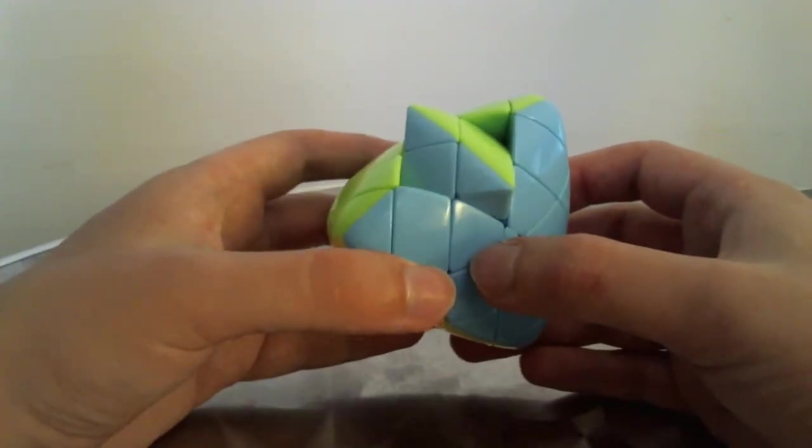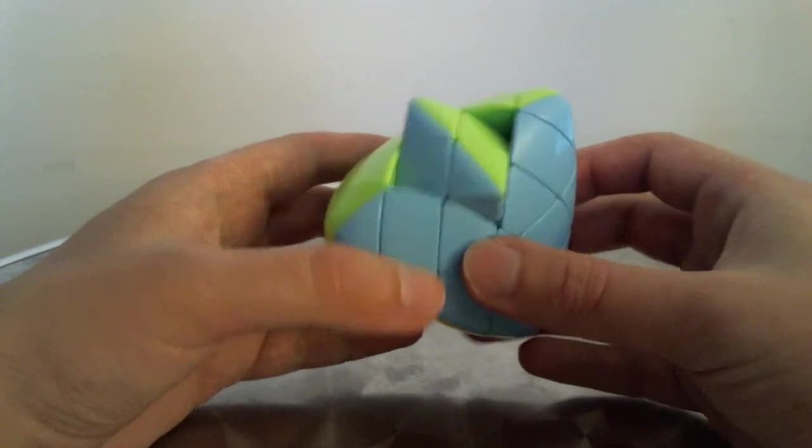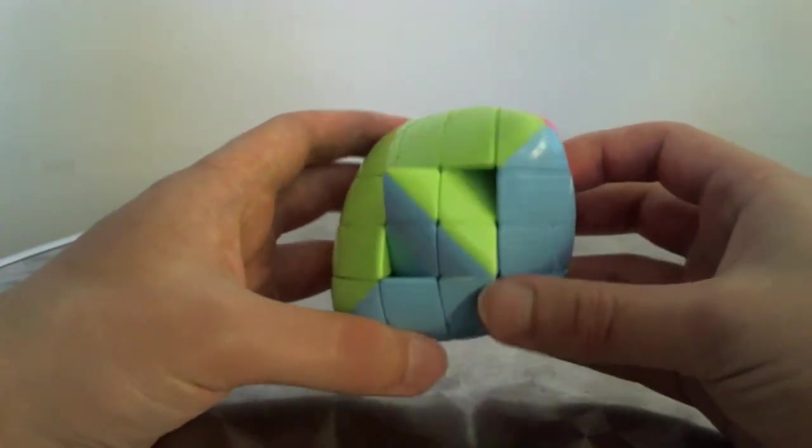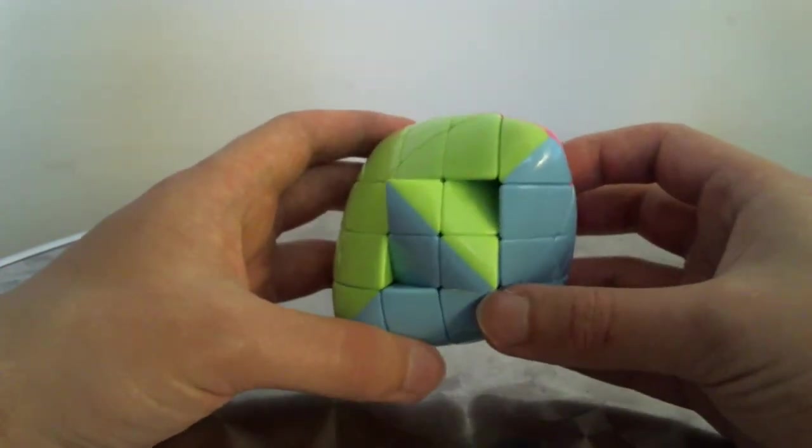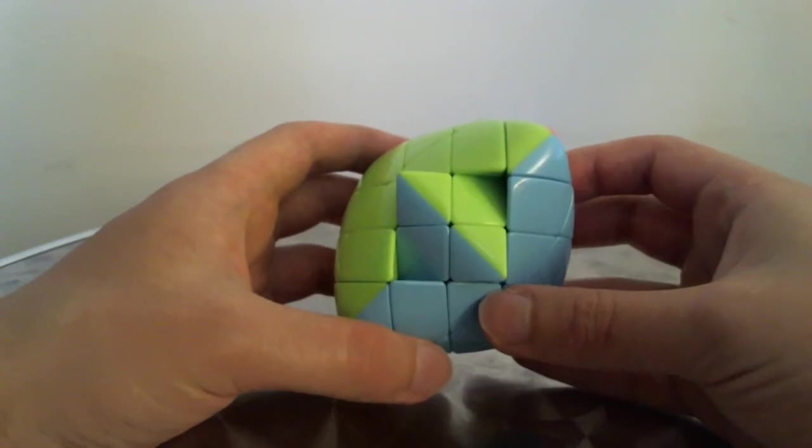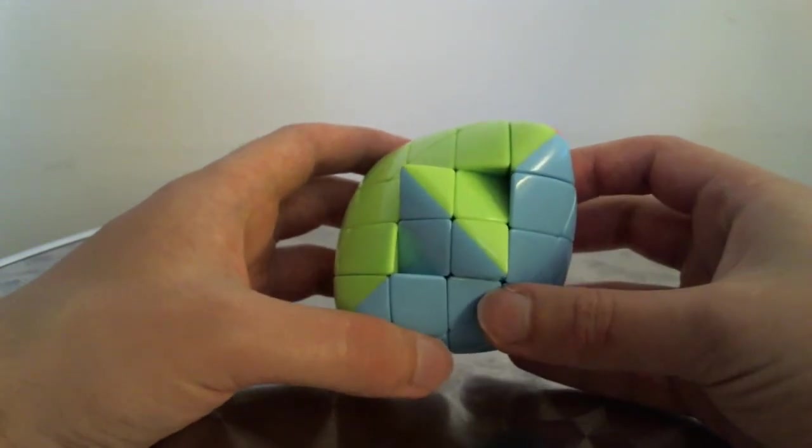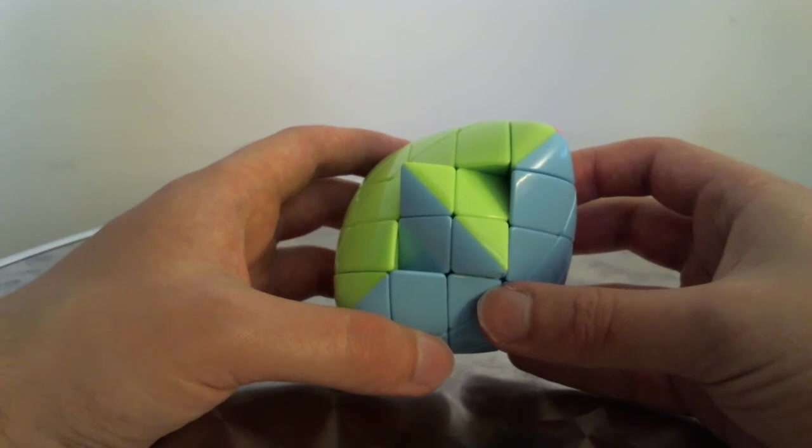Okay, so in this video I'm going to show what to do in a situation like this where with certain 4x4 shape mods you have a single center that is rotated 90 degrees. Normally this kind of situation is impossible.